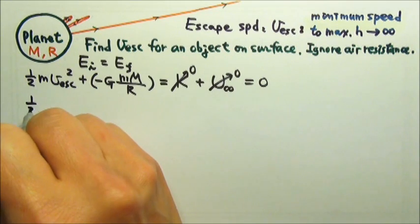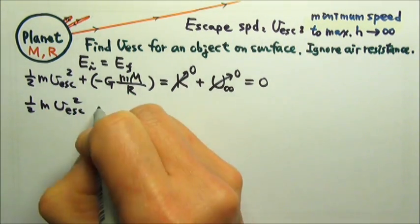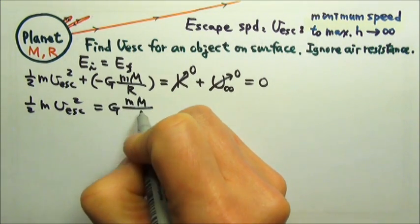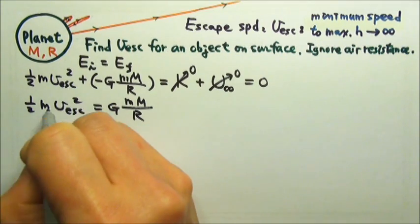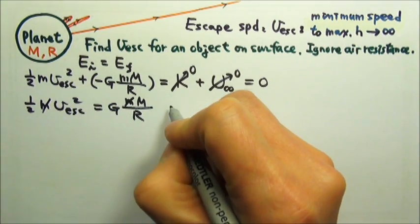So we have one half m v_esc squared. And then I can move this one over, I get GMm over R. So I can cancel the little m, and then I can multiply by two on both sides.